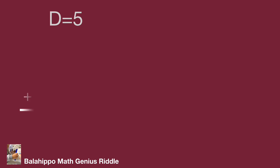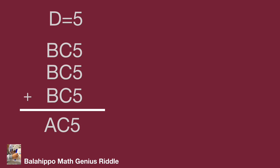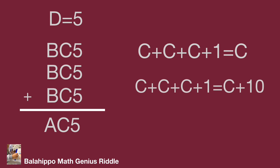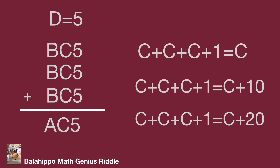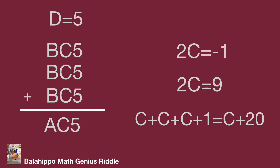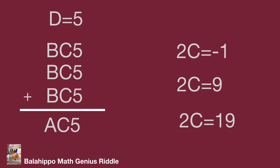While D = 5, substitute D with 5 into our question. Then look at the tens digit C. This leads to three conditions: C + C + C + 1 = C, or C + C + C + 1 = C + 10, or C + C + C + 1 = C + 20. Solving each gives 2C = -1, 2C = 9, or 2C = 19. In all three conditions, C is not an integer, so we remove the D = 5 condition.